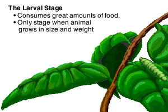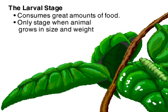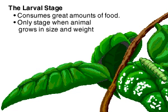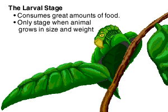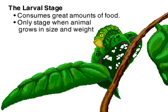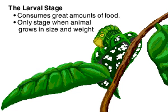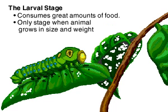An example is the butterfly. After hatching from the egg, it becomes a larva, the first stage, which we recognize as a caterpillar. During this larval stage, the caterpillar is slow-moving and consumes a great quantity of food. This is the only stage in the process when the animal grows in size and weight.